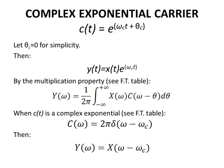When c(t) is a complex exponential, the Fourier transform is C(ω) = 2π·δ(ω - ω_c). Then, Y(ω) = X(ω - ω_c).